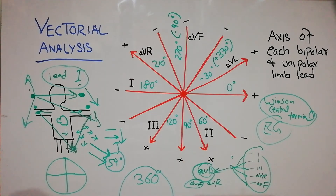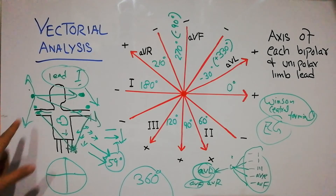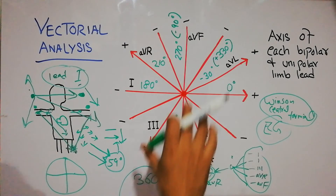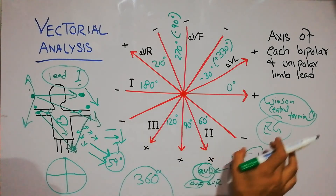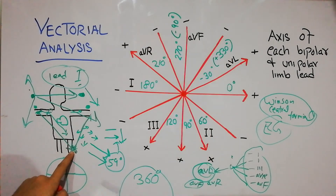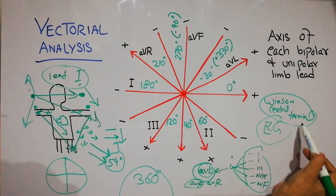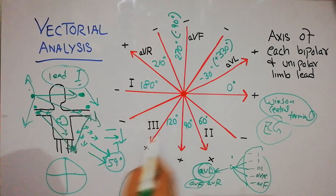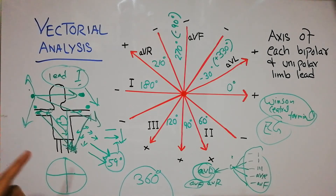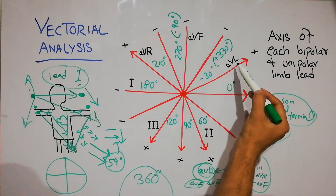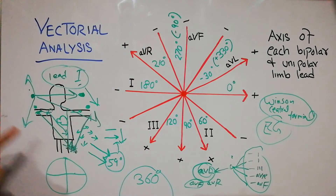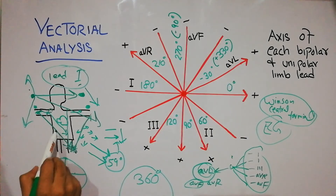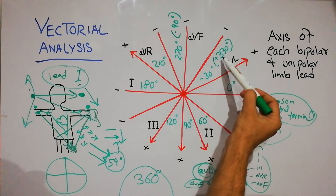When all leads are combined and AVR is the positive lead, it looks at the right arm and its value is 210 degrees. When all other leads are combined in the Wilson central terminal and AVF is the positive lead — looking at the left foot — it is assigned 90 degrees. When all other leads are combined and AVL is the positive lead at the left arm, AVL is obtained and it looks toward the left arm, giving minus 30 degrees or 330 degrees.